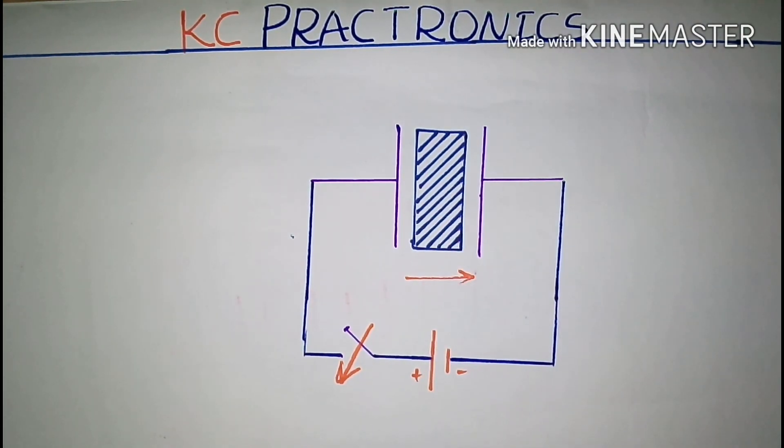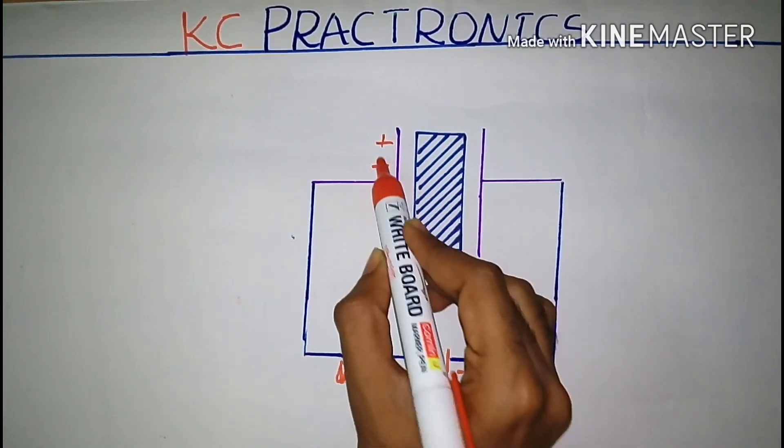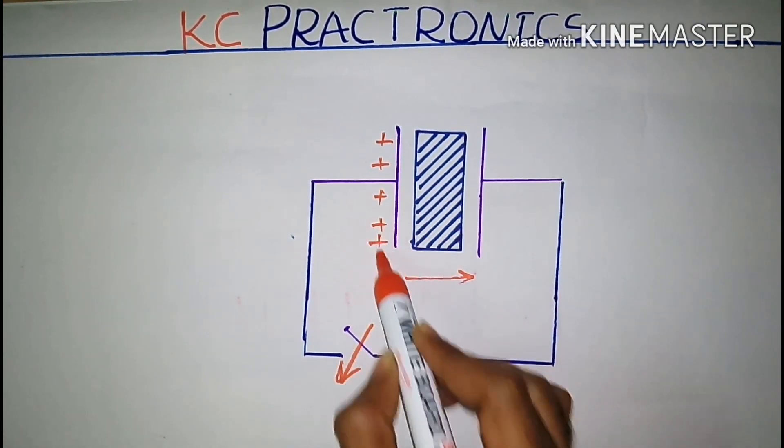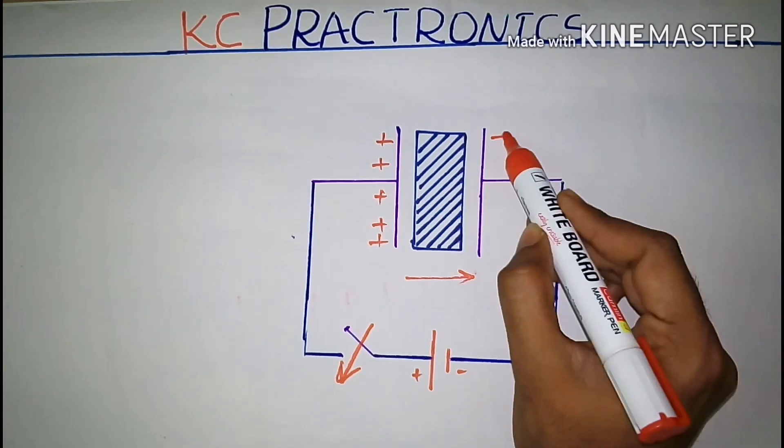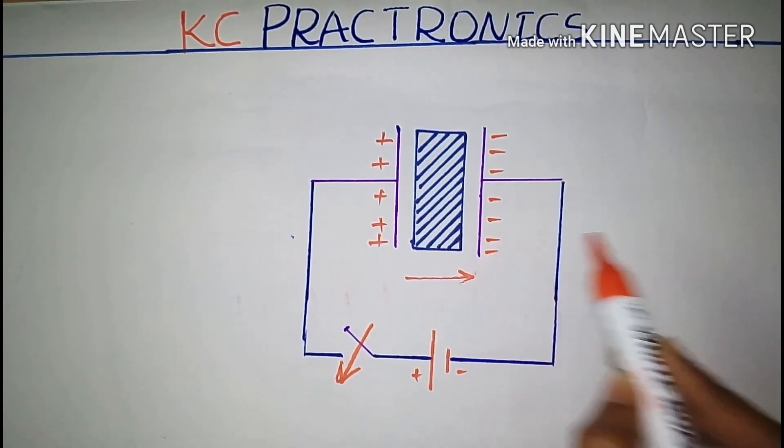The positive charges from the positive terminal of the battery move to the capacitor and get accumulated at one plate of the capacitor. The negative charges from the negative terminal of the voltage source move to the other plate and get accumulated there.